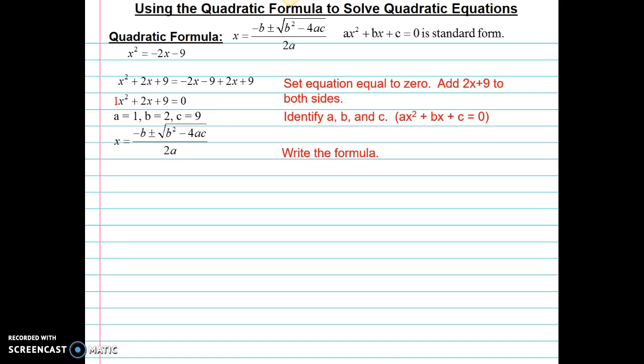Write my formula. Again, each time you use a formula, you need to write a formula, and then substitute. So here, I've substituted my 2 for b, my 1 for a, and my 9 for c. Now, I'm going to do the simplification. So 2 squared is 4. 4 times 1 times 9 is 36.